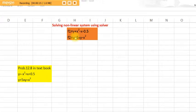I will give you an example from the textbook, problem 12.8. The equations are: y equals minus x squared plus x plus 0.5, and y plus 5xy equals x squared. This is two equations, two unknowns, and both are nonlinear.